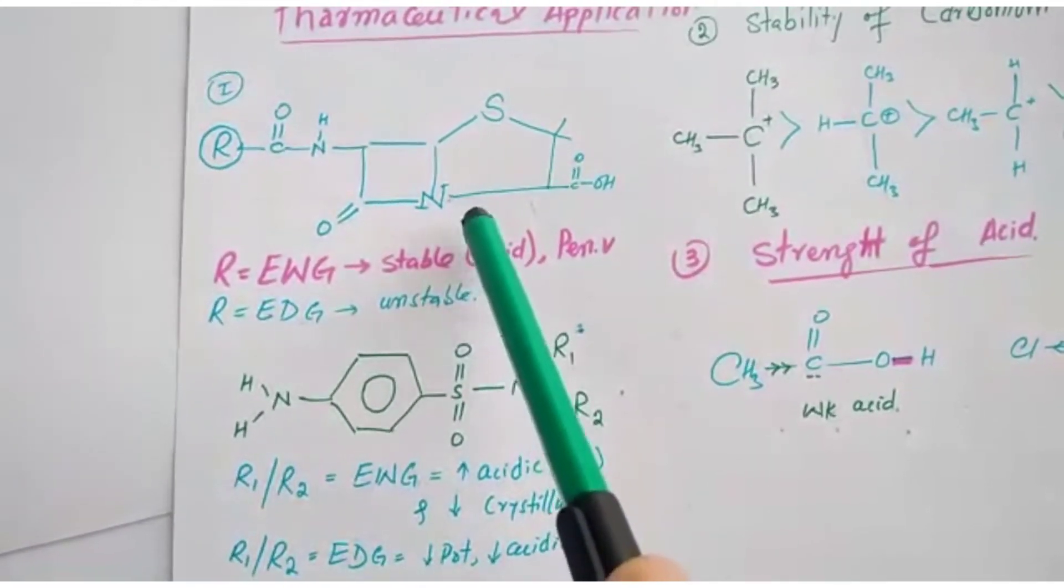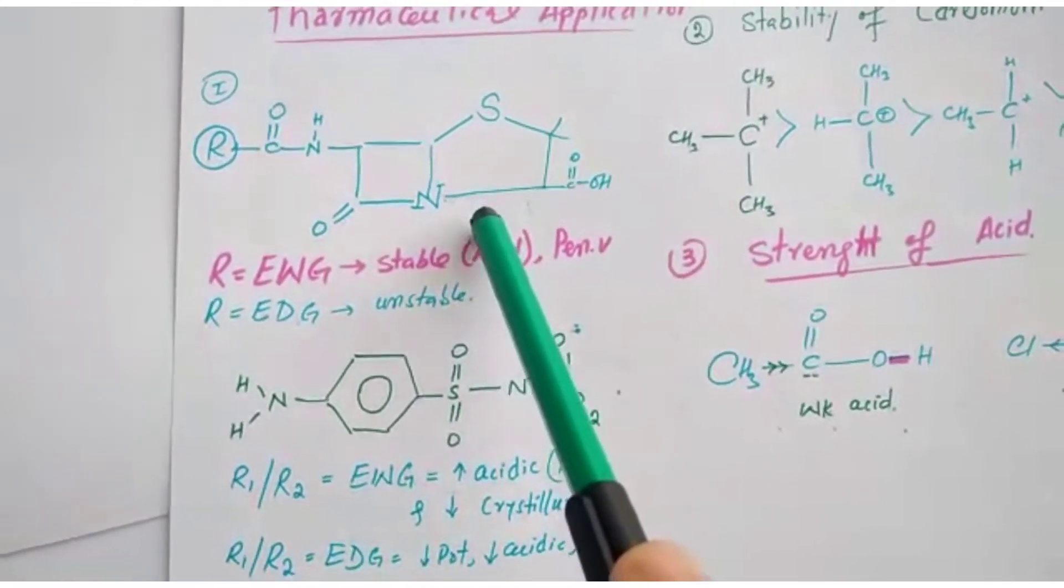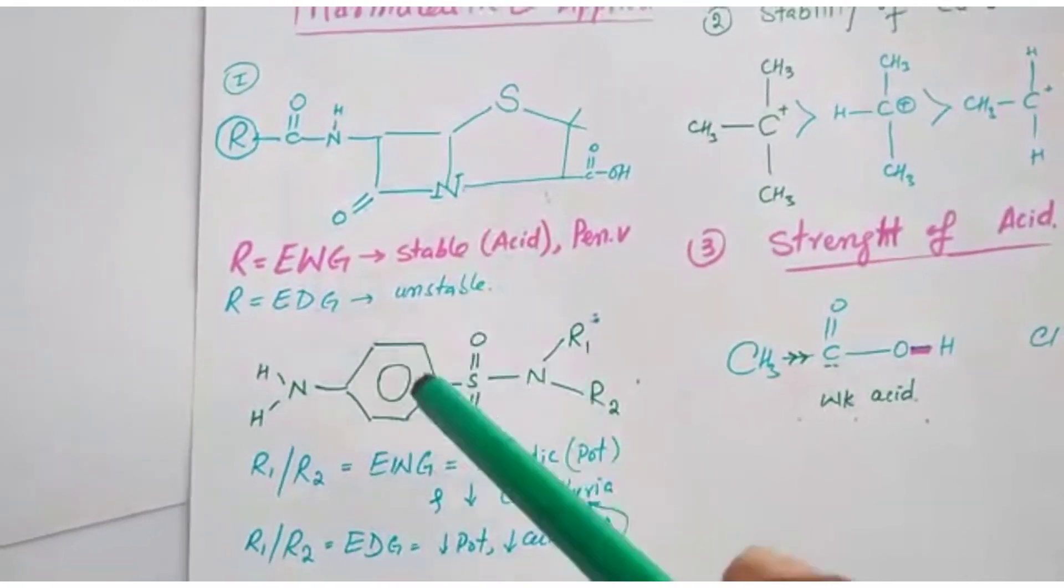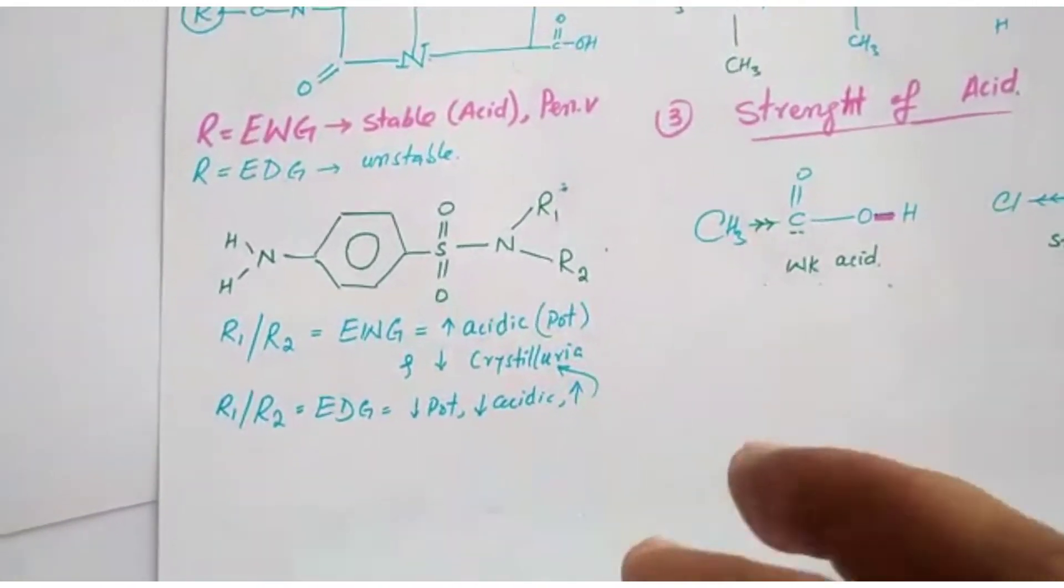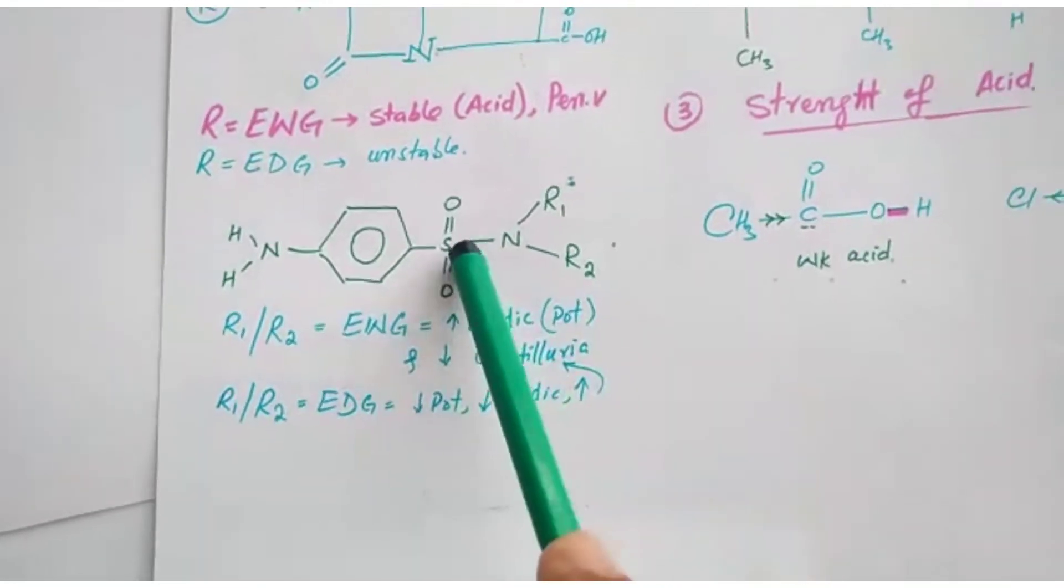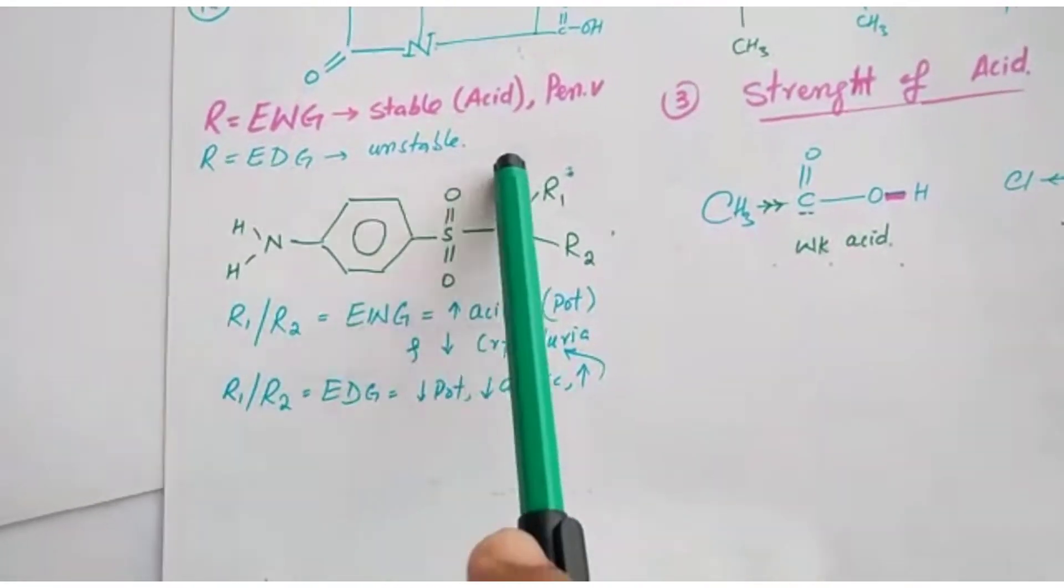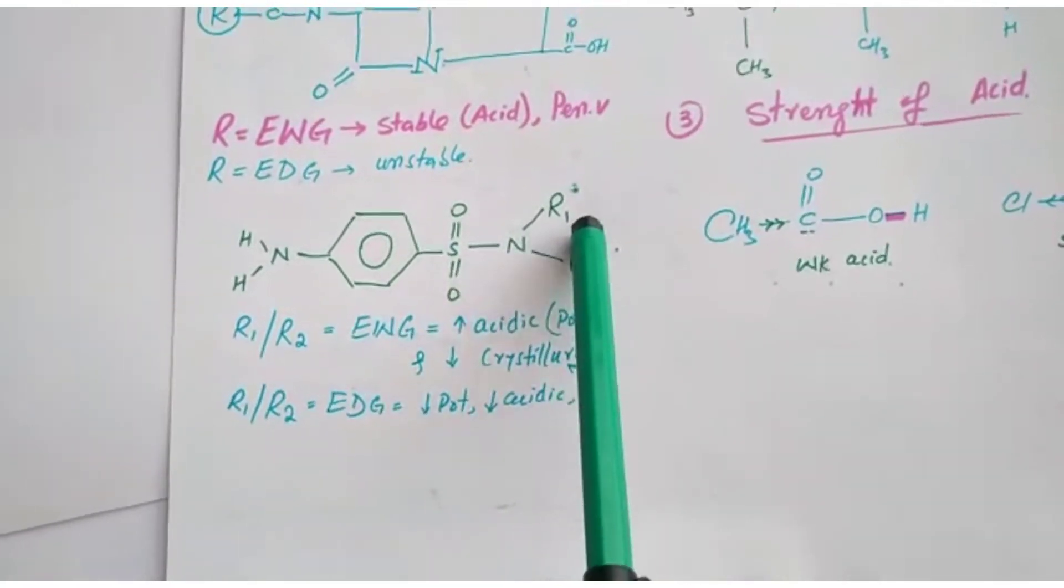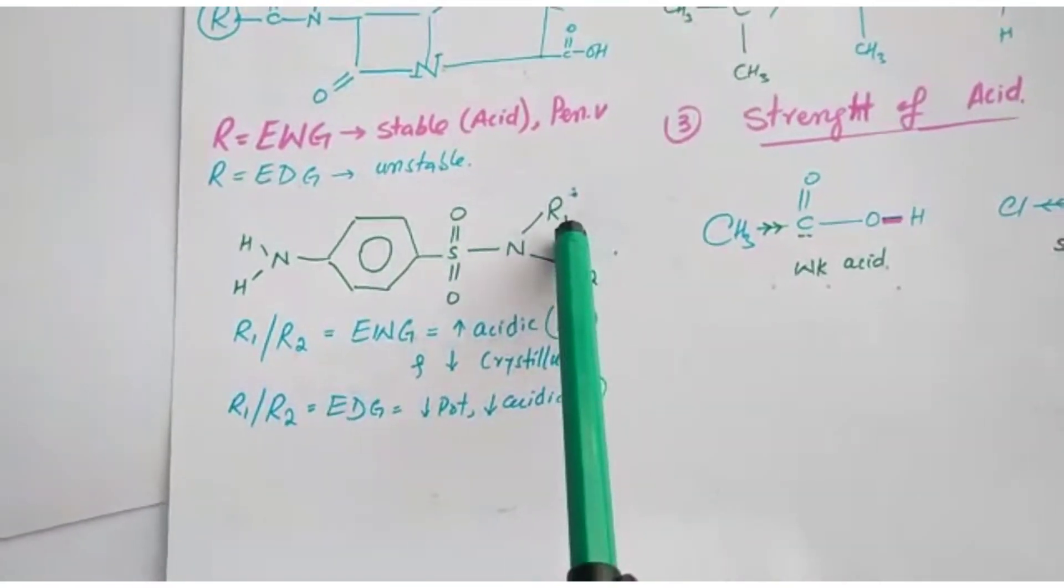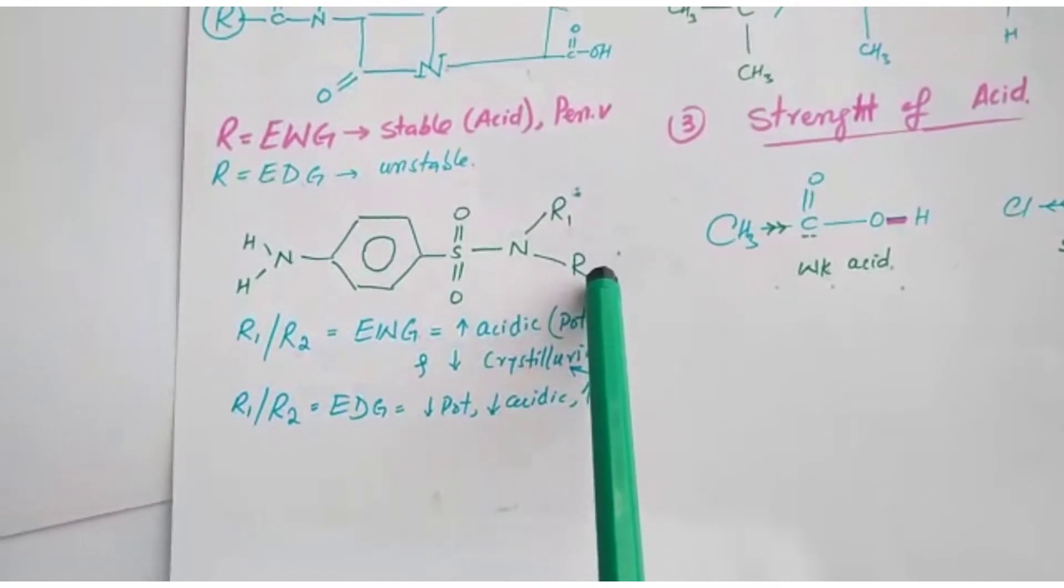This is the structure of sulfonamides. This is R1, R2. If R1 and R2, R1 or R2, or both are electron withdrawing groups.